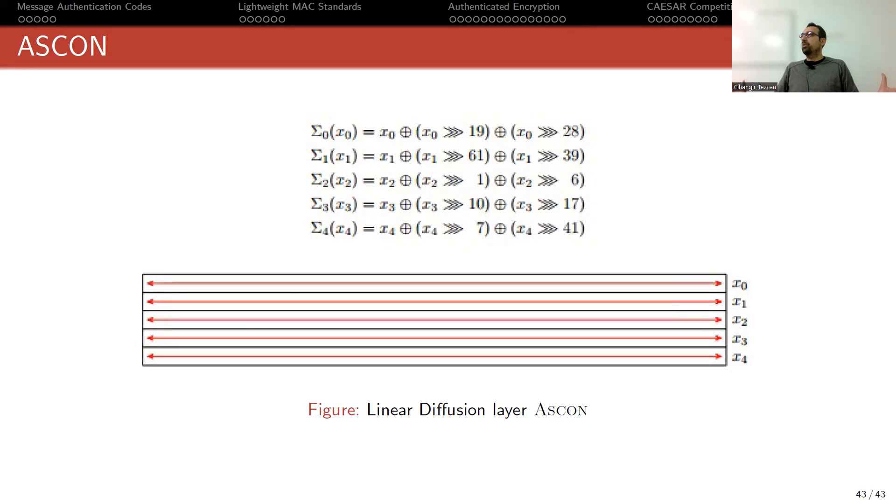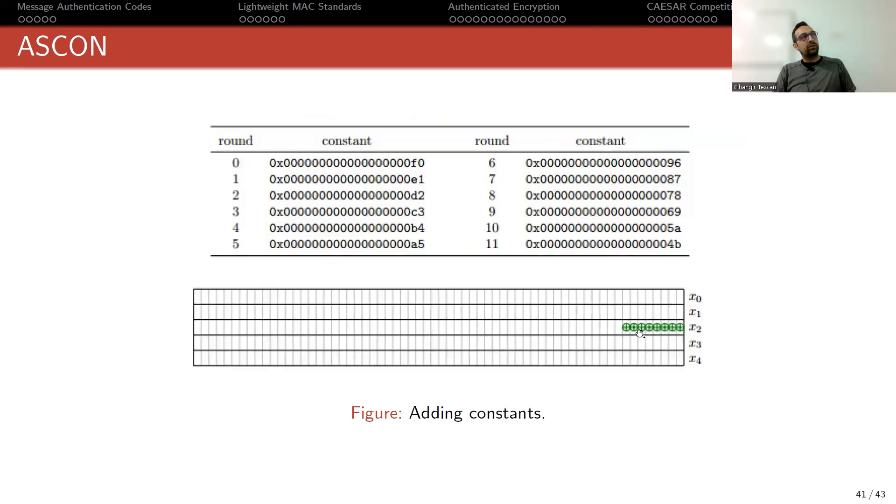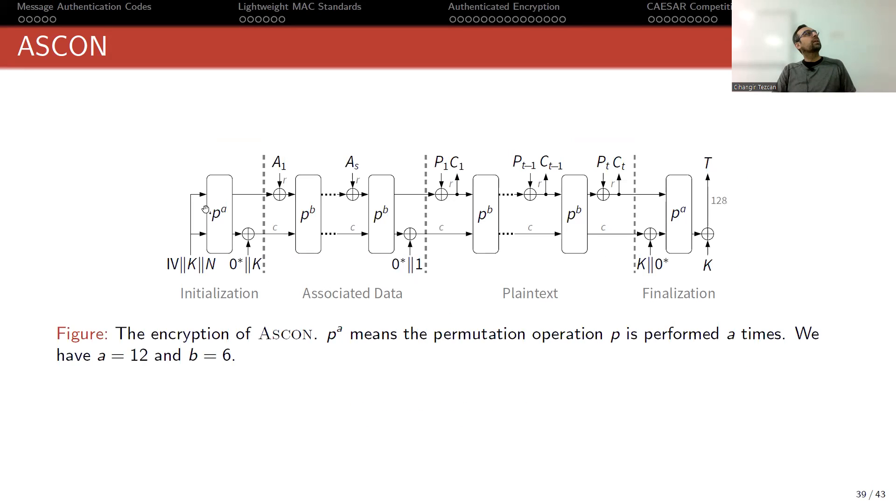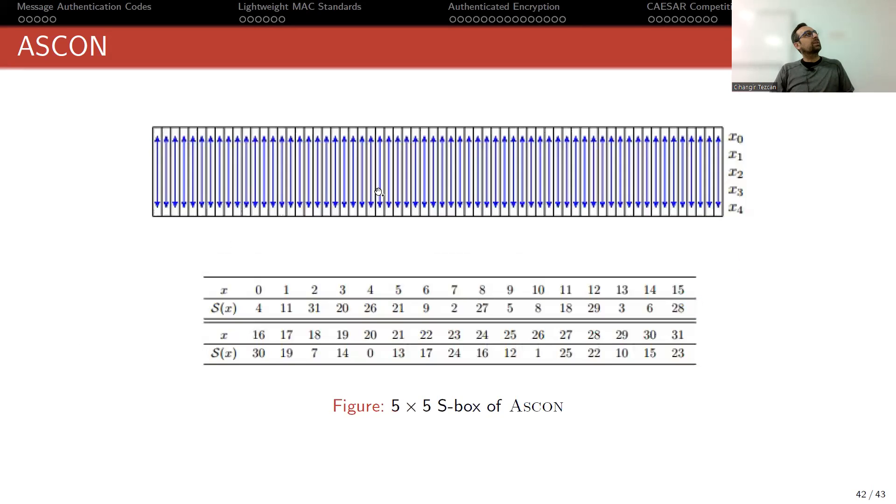This is what the permutation does. If I go back: round constant, S-box, rotation. This is just one round, and you repeat it many times and obtain the result. So super fast. And again, this S-box operation might look costly because you have to take all of those five bits, put it in the table and get the result and write it back.